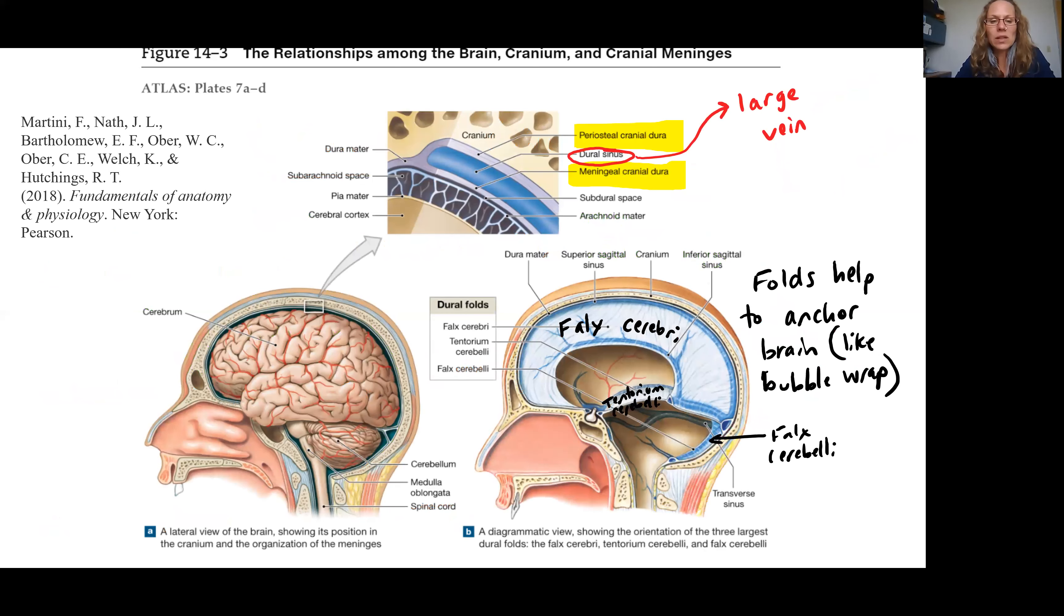Notice here in our diagram from our textbook that you have your periosteal cranial dura anchored to the bone, you have a dural sinus, which is a large vein, and then you have that meningeal cranial dura. This is the layer closest to the arachnoid mater.